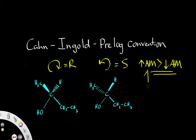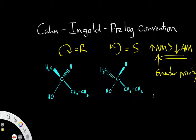We are using the Cahn-Ingold-Prelog convention system for counting — basically a method by which atoms and groups are assigned priorities. When we assign these priorities, we are looking for stereogenic centers or chiral carbons, and you can use those terms interchangeably. In order to have an R or S configuration, the chiral carbon must be attached to four different substituents.